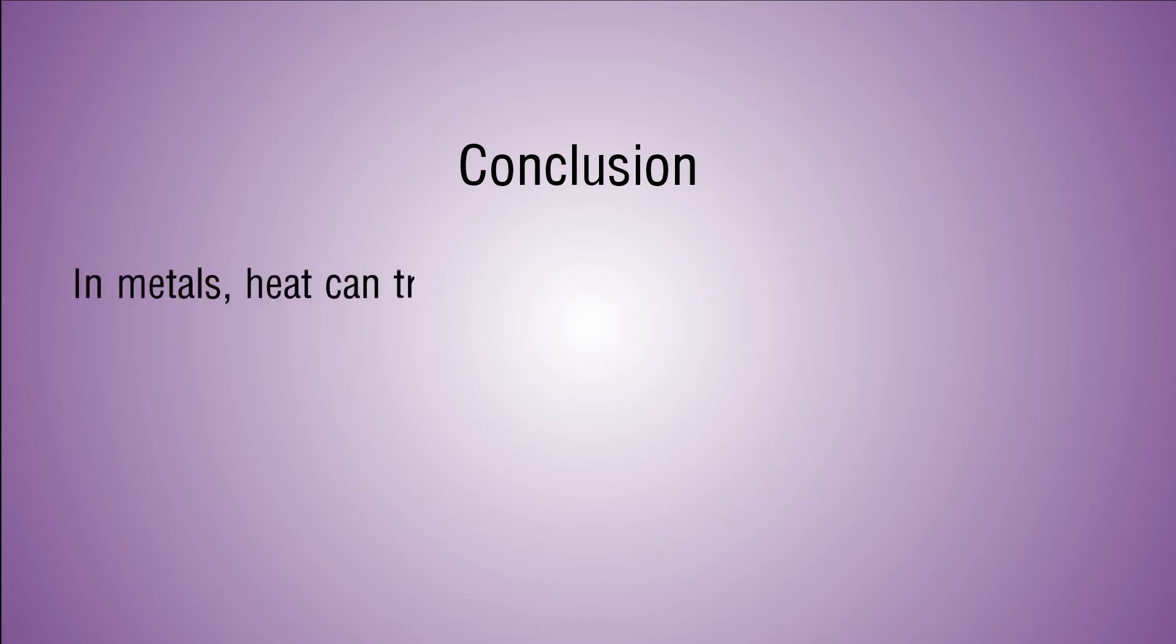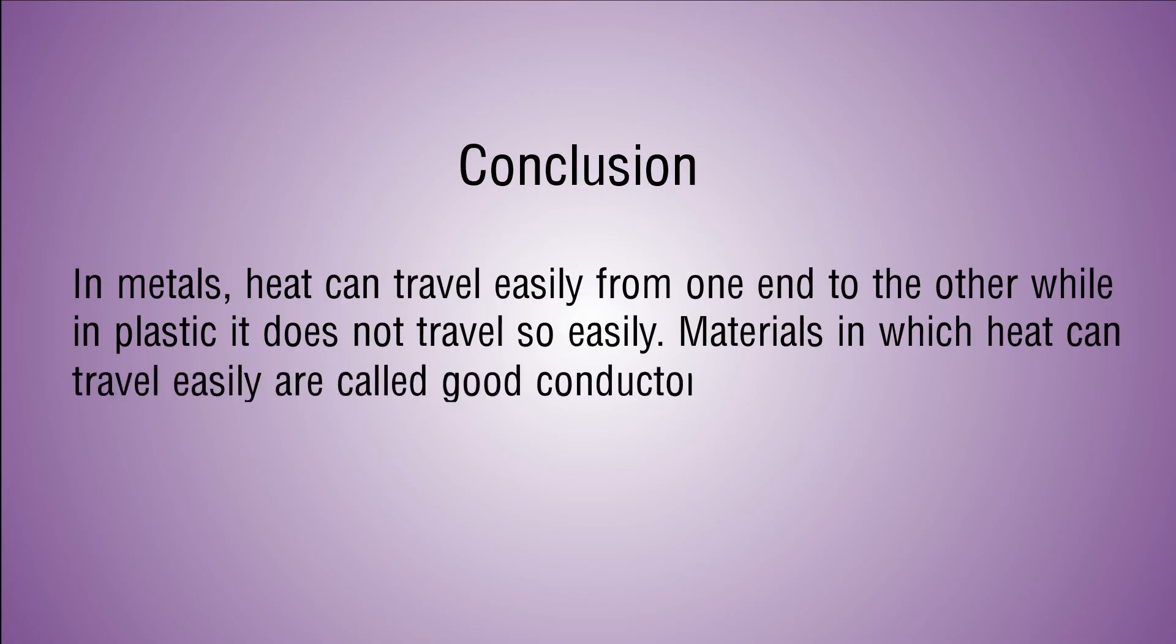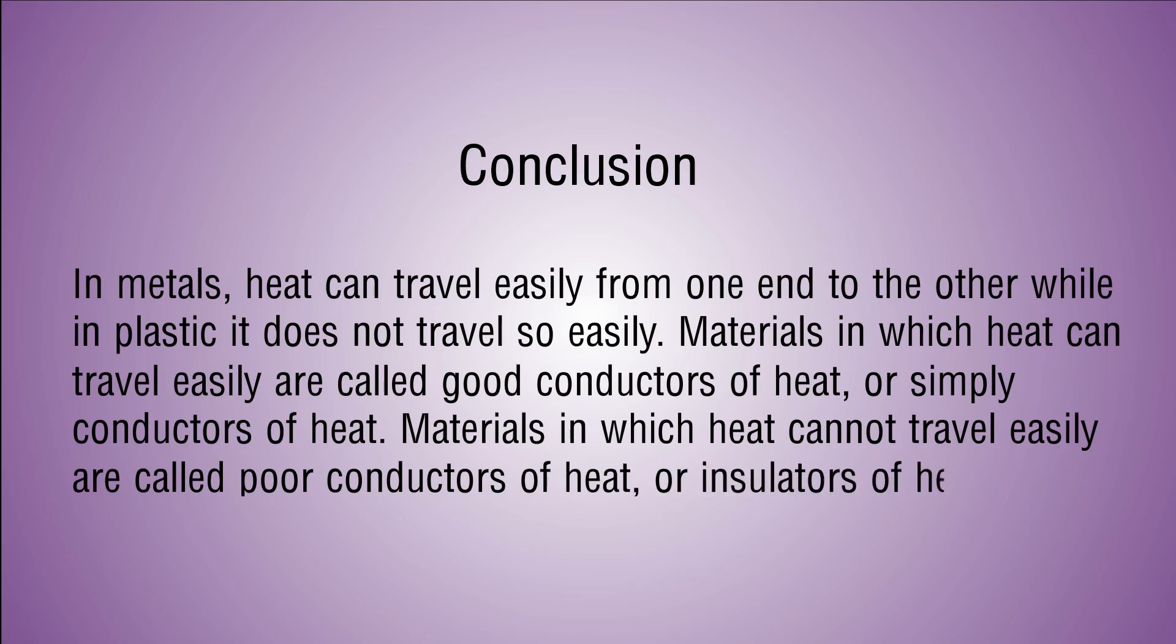Conclusion: In metals, heat can travel easily from one end to the other, while in plastic it does not travel so easily. Materials in which heat can travel easily are called good conductors of heat, or simply conductors of heat. Materials in which heat cannot travel easily are called poor conductors of heat, or insulators of heat.